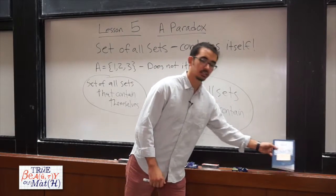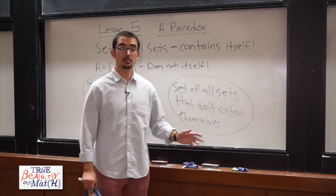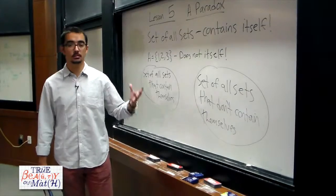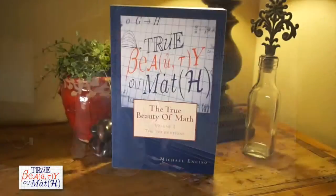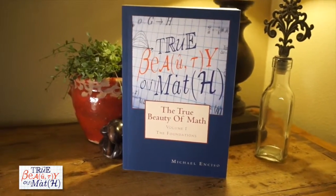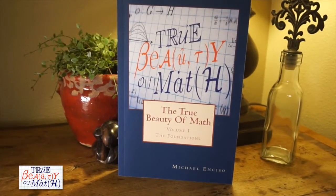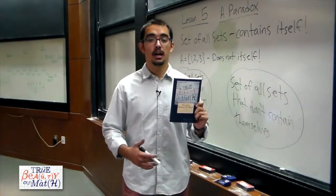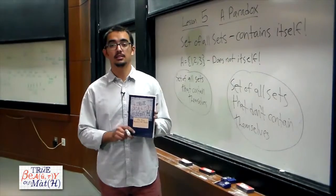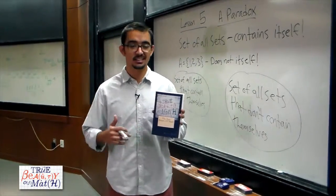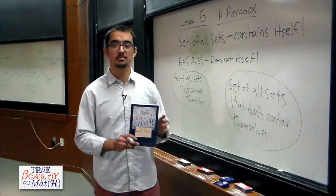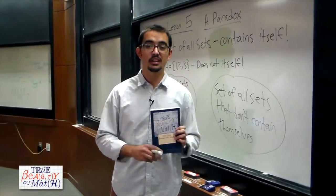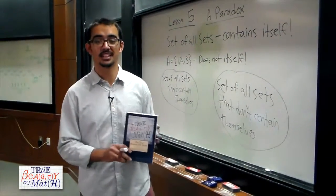For more details on Russell's paradox, you can check out the written lesson, where we also give a warm-up paradox that is similar in nature to this one but a little bit easier to manage on one's first exposure to it. And for even more details, you can check out the True Beauty of Math Volume 1, where we go over this paradox in even more detail and discuss some of the ways that people have tried to fix it and the ways we convince ourselves it's still okay to move forward with math even though these foundations may seem a little shaky at times. Once we're happy with the paradox we've just uncovered, I'll see you in Lesson 6.